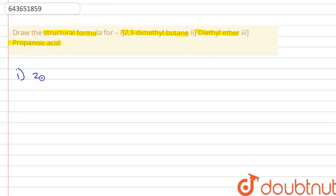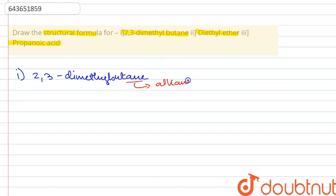The first compound is 2,3-dimethylbutane. As you can see, the suffix is '-ane', which means it is an alkane. The root 'but' means there are four carbon atoms present in this compound, and there are some side chains — two methyl groups attached at the second and third carbon atoms.